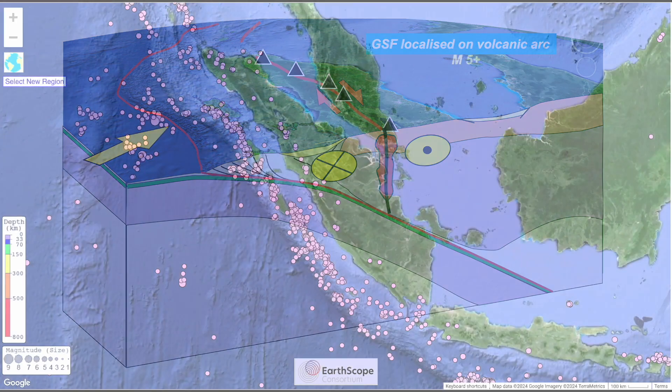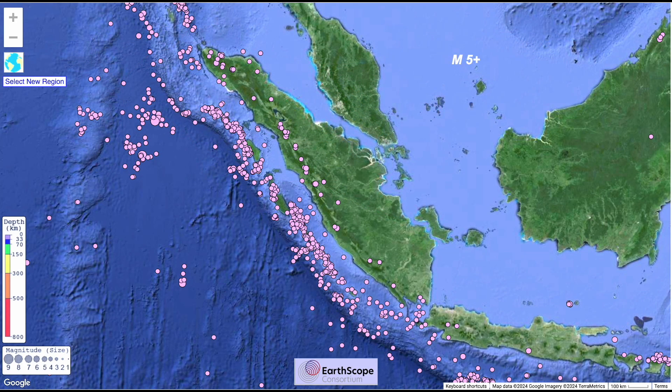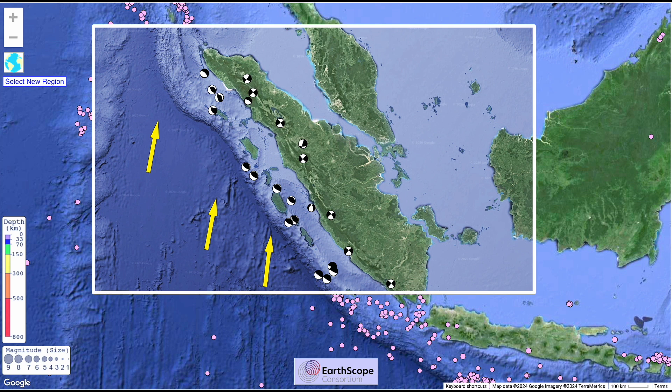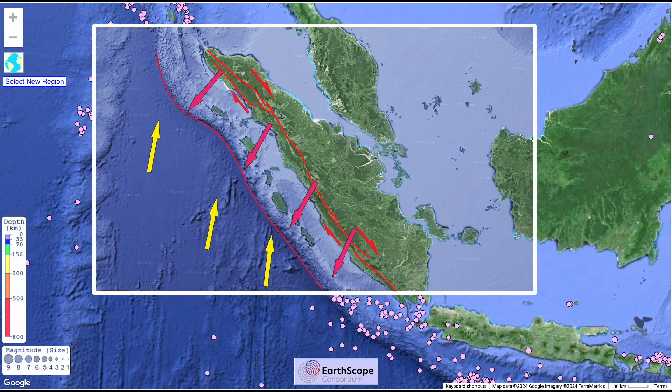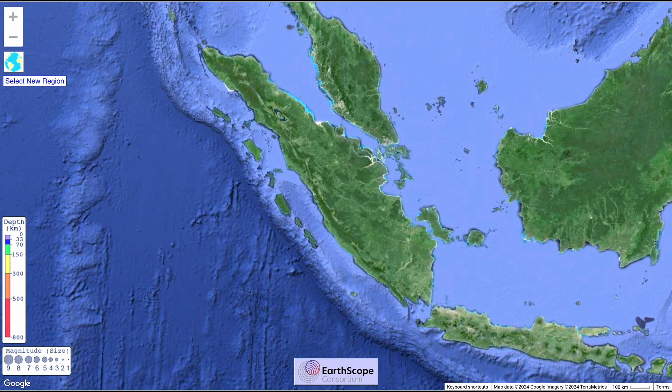The island is a complex plate boundary, a zone of oblique subduction partitioned into fore-arc thrusting and regional strike-slip faulting tied to the volcanic arc. It's a great illustration of interacting internal earth processes of magmatism and deformation.